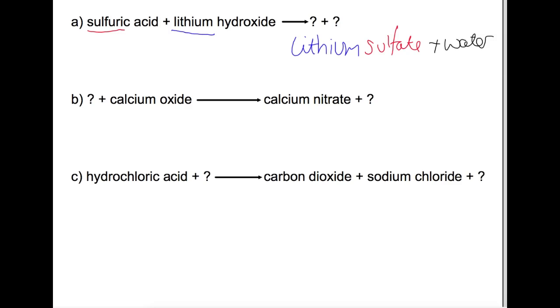In the next reaction we can see that we have calcium nitrate, and that came from calcium oxide. So the nitrate gives us an indication of what acid we used, so we would have used nitric acid. And we are also missing the water here.